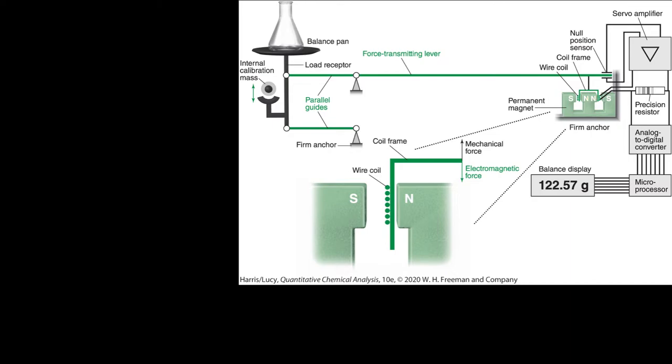And it does so until the null position sensor indicates that you're back in the normal null position. And this input necessary to balance things out, to make sure the electromagnetic force is balanced by the mechanical force coming from the weight of the object, is converted using an analog to digital converter. So in the analog world, everything is continuous, but in the digital world, we need to change things into ones and zeros. And this is ultimately read by a microprocessor and displayed and calculated on our balance to say, in this case, 122.57 grams, which wouldn't actually be very sensitive at all for an analytical balance.